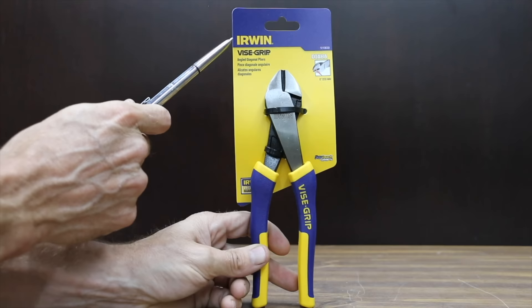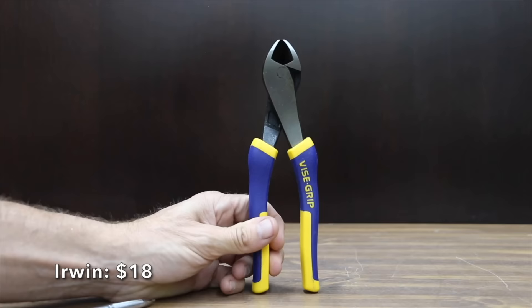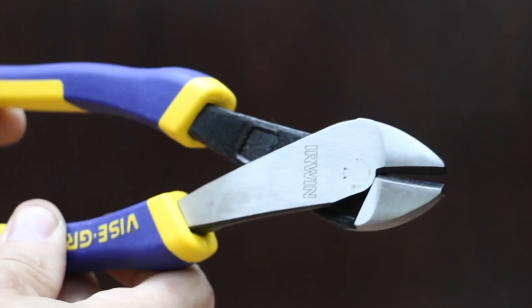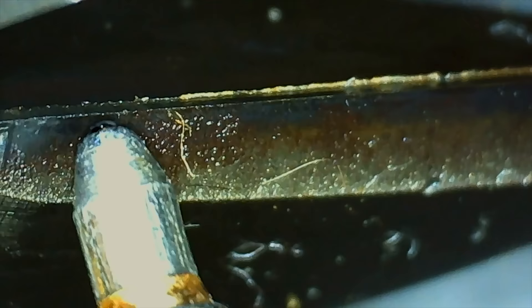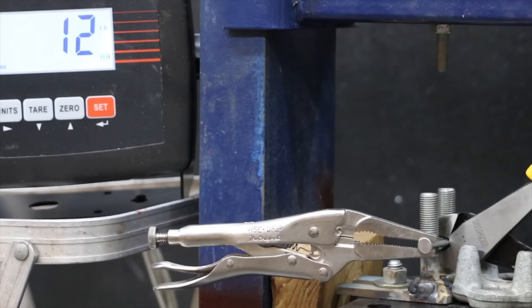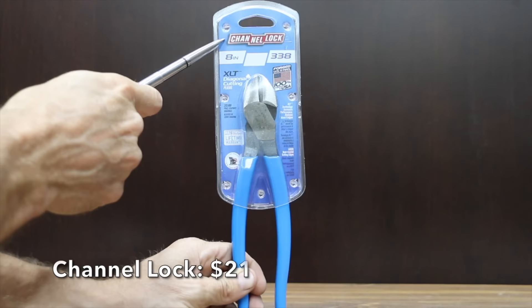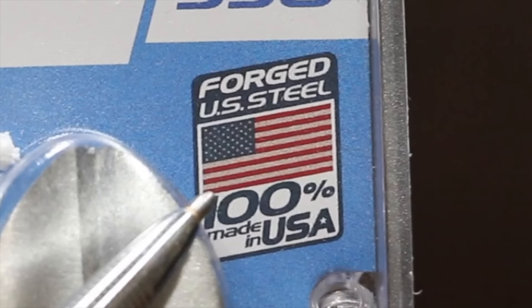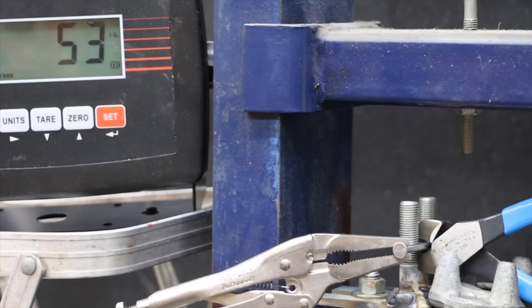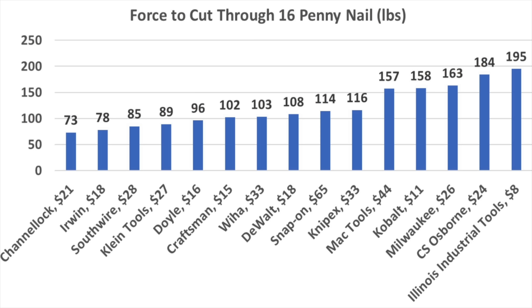It might be tempting to think that you have to spend a lot for performance, but for under $20 you can buy the Irwin diagonal cutters. And you won't need biceps to cut through a super soft nail either. The Irwin made the cut at only 78 pounds compared to 195 for the Illinois Industrial diagonal cutters. Just like the Irwin, the $21 channel lock diagonal cutters made this look way too easy at only 73 pounds. Out of 15 brands, the Illinois Industrial brand is in last place after the first round of competition.